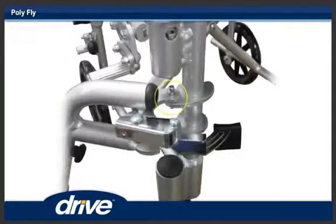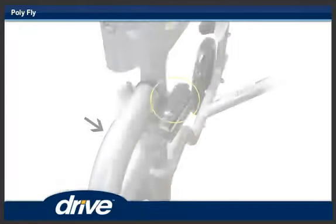Step 5. To install the footrest, align the two holes on the footrest hanger with the hanger pins on the front frame of the polyfly and let the hanger rest on the frame hanger bracket. Step 6.